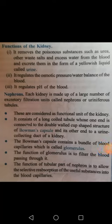Good morning students. As we were discussing the human excretory system in the previous video, we discussed that the human excretory system is made up of four major components: kidneys, a pair of ureters, a single sac-like structure called the urinary bladder, and finally an opening tubule called the urethra. I also told you that kidneys are the chief excretory organs in the human body.